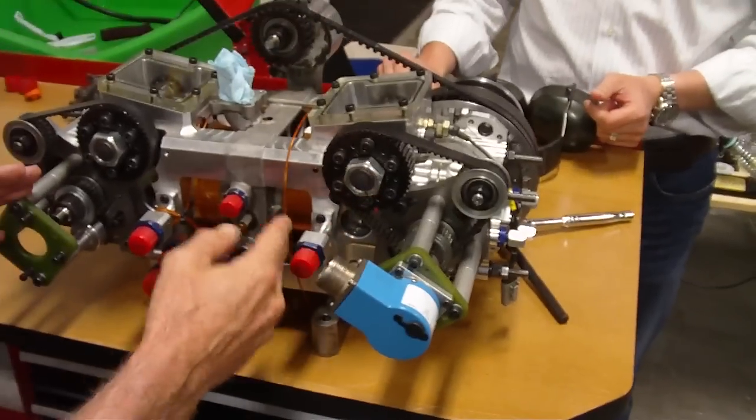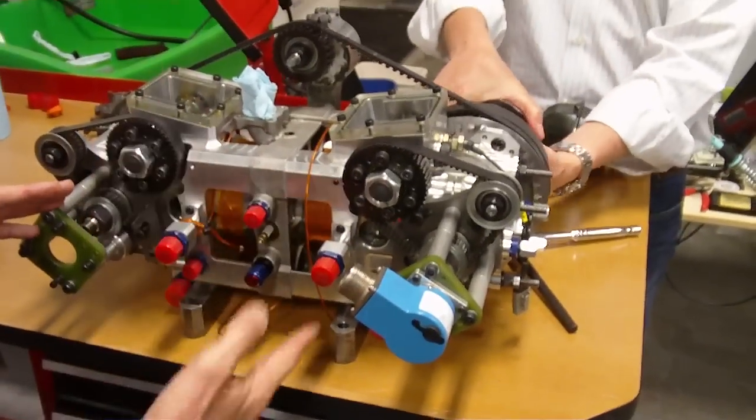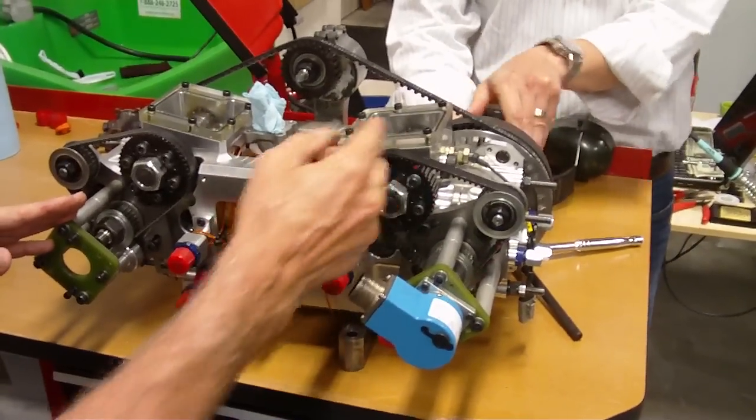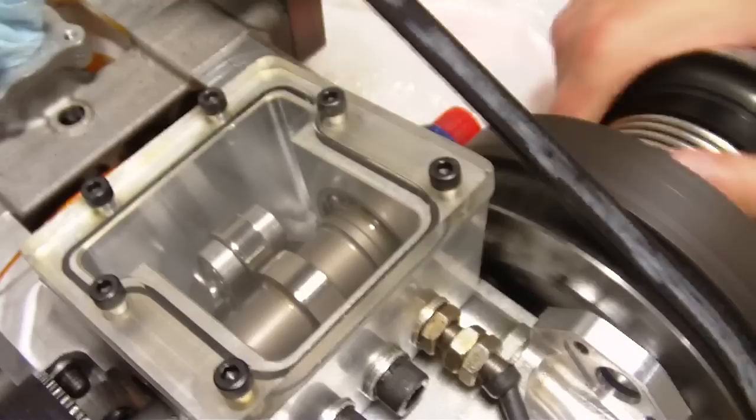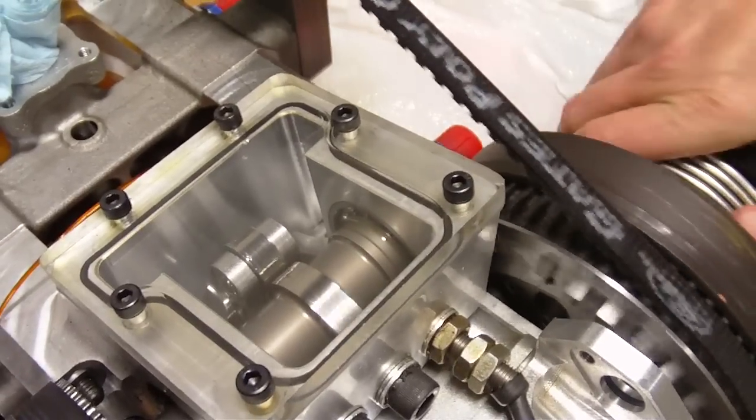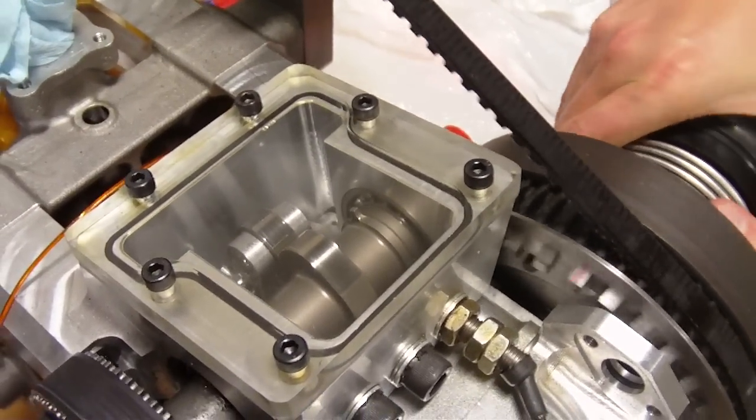The exhaust cam is actuating a sleeve that controls the exhaust flow out of the engine. It actuates through a rocker arm against a valve spring in exactly the same manner as people use for a poppet valve.